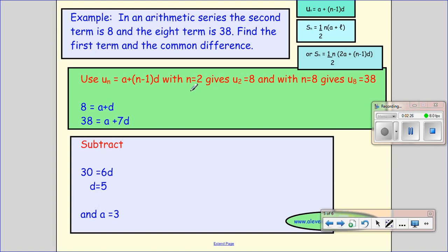So write what you know. So when N equals 2, the second term is 8, and with N equals 8, the eighth term is 38. Looks like I'm dealing with this one, where I have U_n equals A plus N minus 1D, because I'm talking about terms.